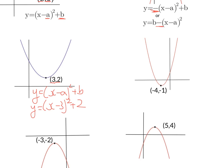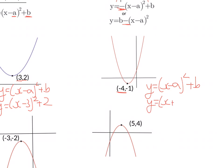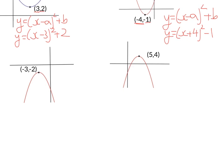The next one — it's a happy curve, so it's going to be of the form y = (x - a)² + b. The x-coordinate goes inside the brackets and changes its sign — it's minus 4, so it becomes plus 4. The y-coordinate goes outside the bracket and does not change sign. So, y = (x + 4)² - 1.